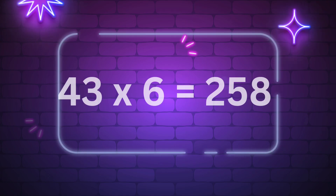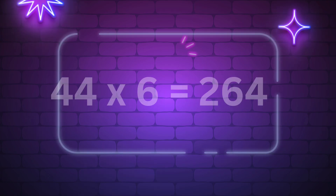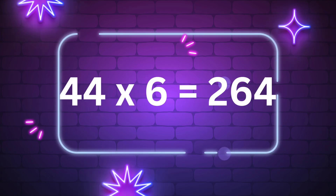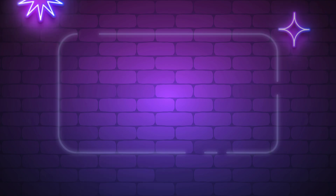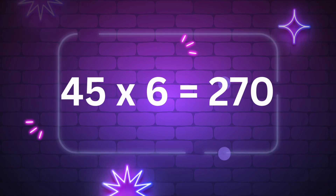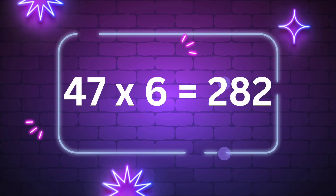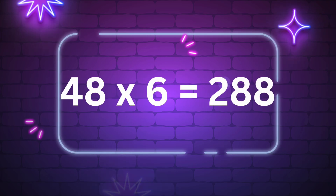Thirty-seven times five is 185. Thirty-eight times five is 190. Thirty-nine times five is 195. Forty times five is 200. Forty-one times five is 205. Forty-two times five is 210.